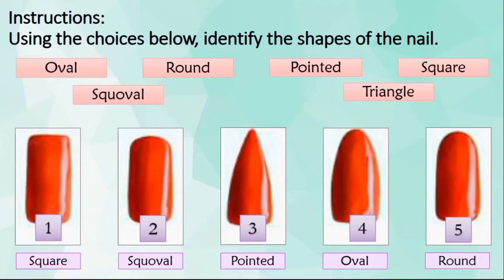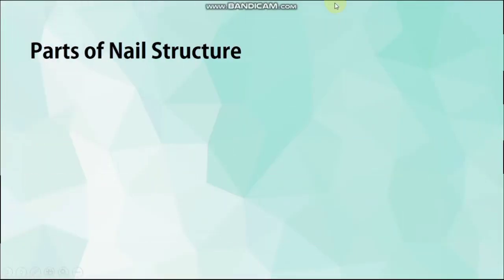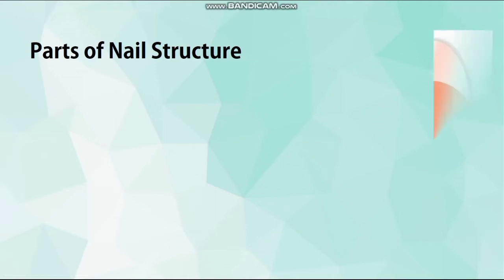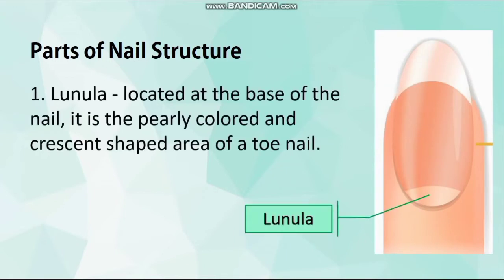You did a good job. Parts of the nail structure. Number 1: Lunula. Lunula is located at the base of the nail. It is the poorly colored and crescent-shaped area of a toenail or fingernail.